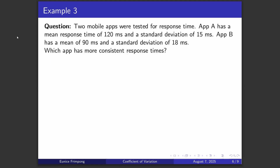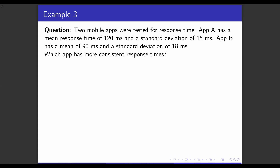Let's try Example 3 together. Two mobile apps were tested for response time. App A has a mean response time of 120 ms and a standard deviation of 15 ms. App B has a mean of 90 ms and a standard deviation of 18 ms. Which app has more consistent response times? Setting up the table: App A has mean 120, standard deviation 15; App B has mean 90, standard deviation 18.